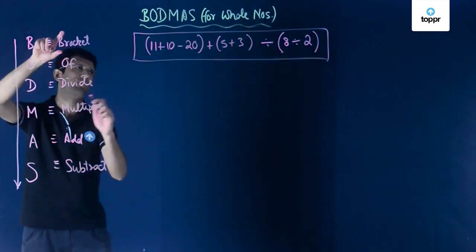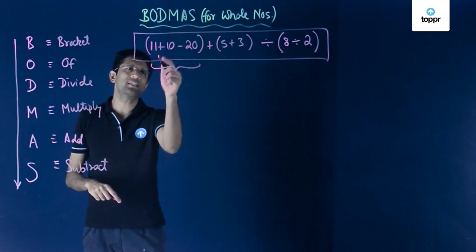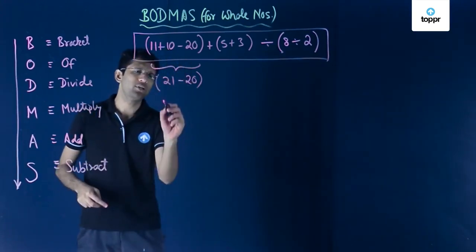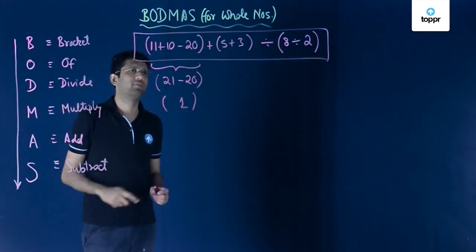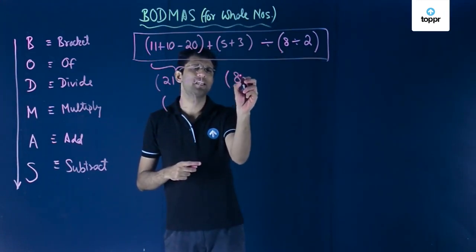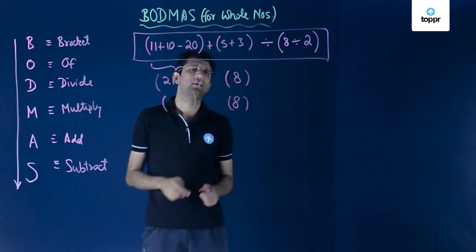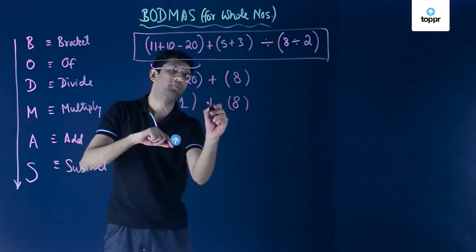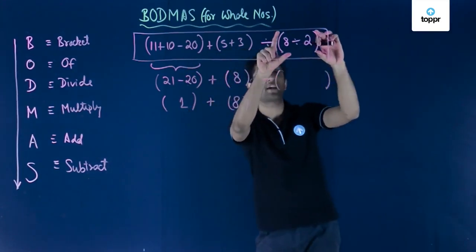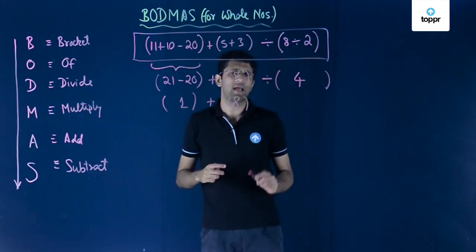We apply brackets first. The first bracket, 11 plus 10 minus 20: 11 plus 10 is 21, and 21 minus 20 is 1. The second bracket, 5 plus 3, equals 8. The plus sign between the brackets is preserved. The third bracket contains 8 divided by 2, which equals 4. So the expression becomes 1 plus 8 divided by 4.